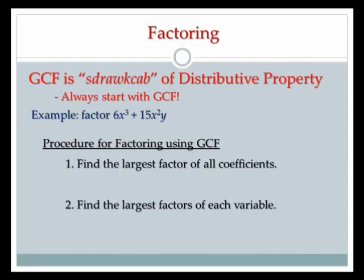So you can see the example there. We're going to factor 6x cubed plus 15x squared y. The procedure for factoring GCF: step number one, I want to find the largest factor for all the coefficients. So I'm looking at the 6 and the 15 — I want to find the biggest thing that divides out evenly from all the numbers. And I can see that 3 is the largest factor of all the coefficients.